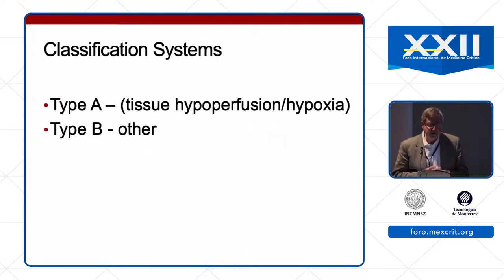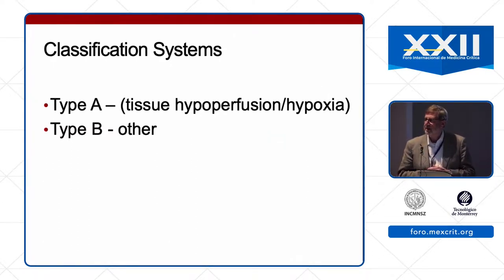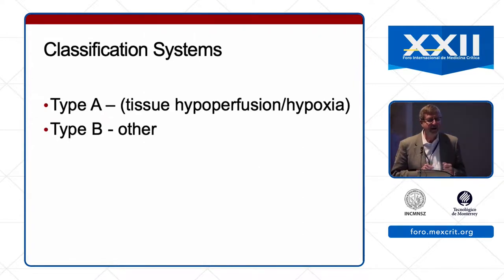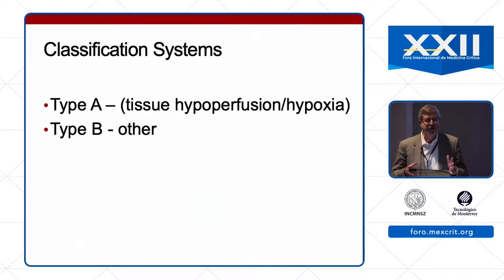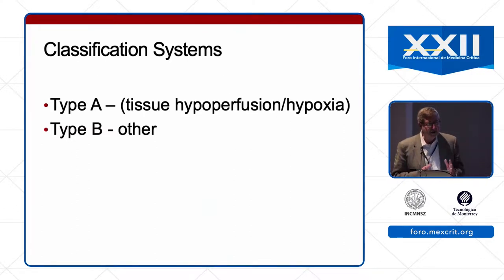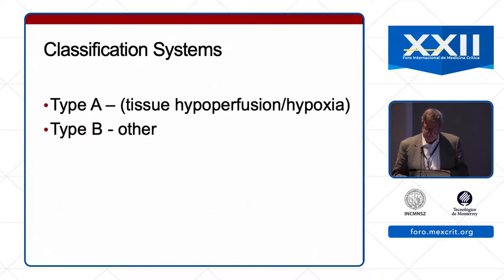Traditionally and currently, we talk about type A and type B. When we talk about type A lactic acidosis, we're talking about the cells being deprived of oxygen, typically because of hypoperfusion, but it could be because of very low oxygen in the blood.